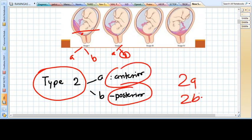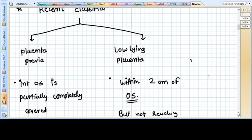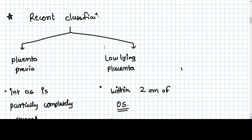Now we have the recent classification. In recent classification, we try to make this classification a lot more easier than the previous one. It classifies as either placenta previa or low-lying placenta.